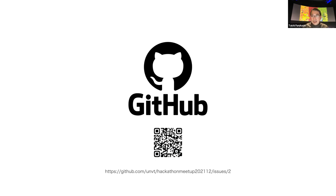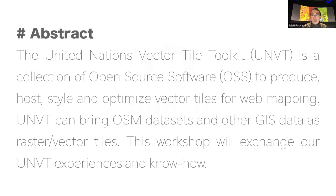Please join, discuss, and help make new features or good output. Today's workshop abstract is about UNVT — the United Nations Vector Tile Toolkit — a collection of open source software, also known as FOSS4G. This OSS is used to produce, host, style, and optimize vector tiles for web mapping. UNVT can bring OSM datasets and other GIS data as raster and vector tiles.